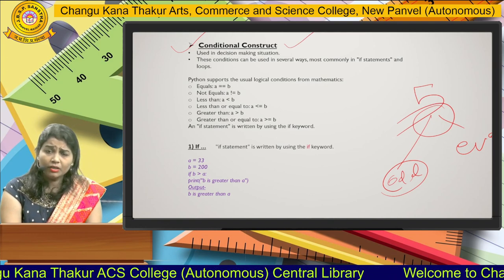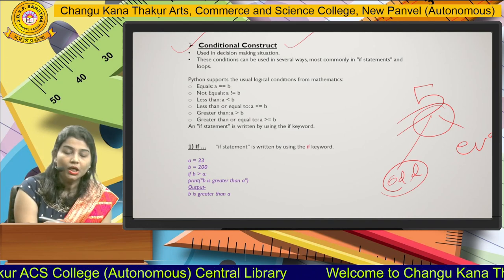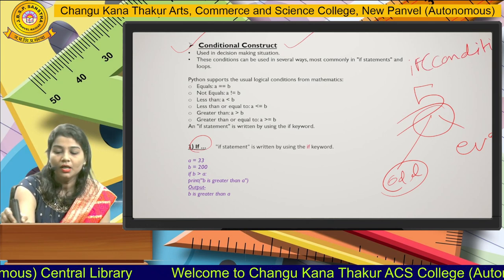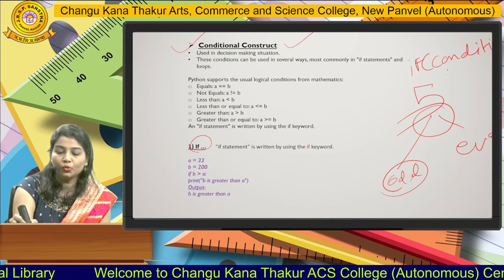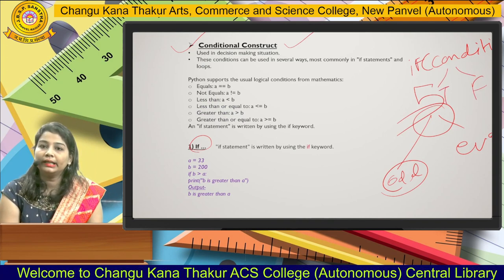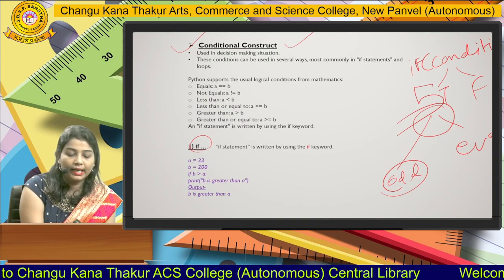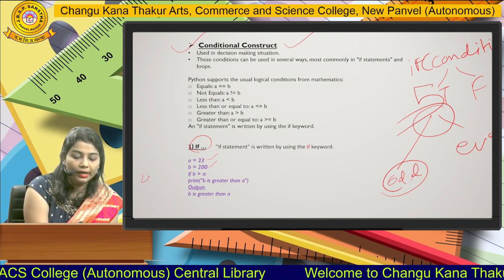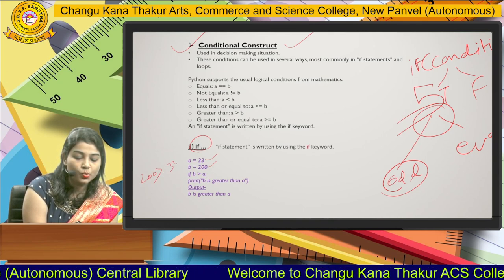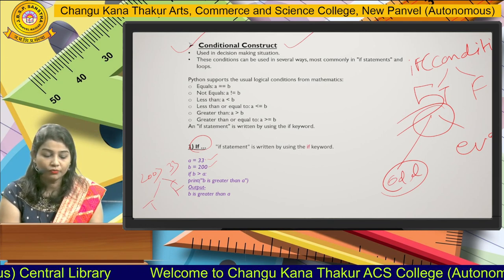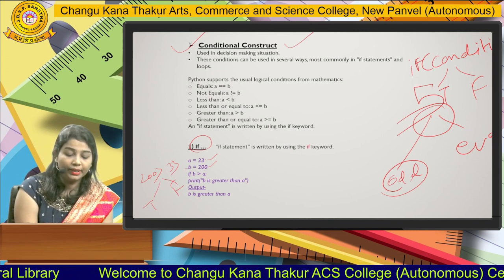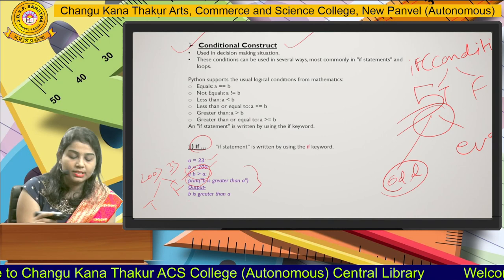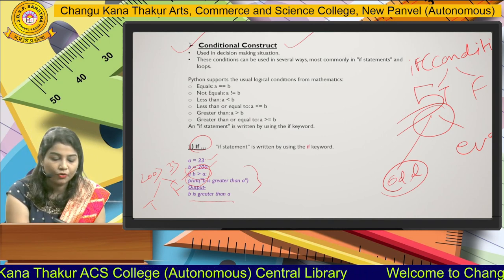The keywords or statements available are: first, the if statement. The if statement works like — you specify a condition, and that condition will be either true or false depending on the input data. In this example, a equals 33, b equals 200. Since 200 is greater than 33, the condition is true, the if block gets executed, and the output is 'b is greater than a'.